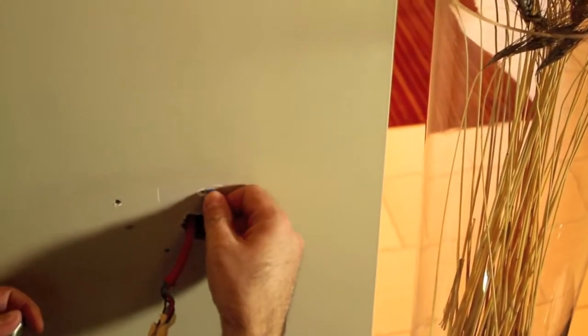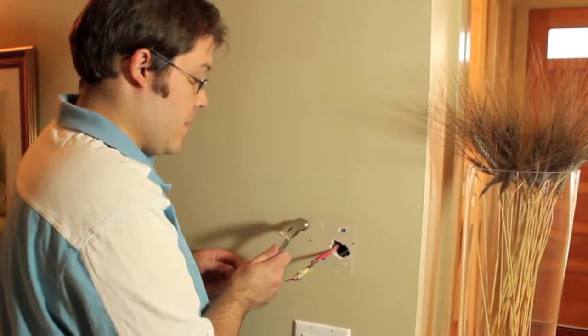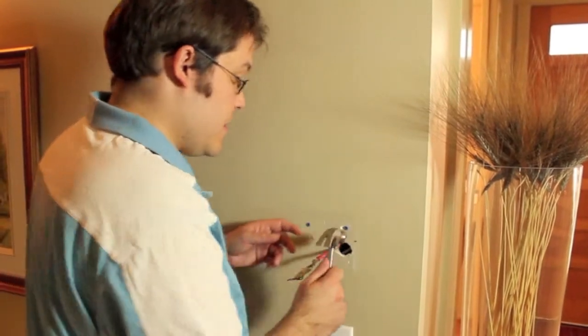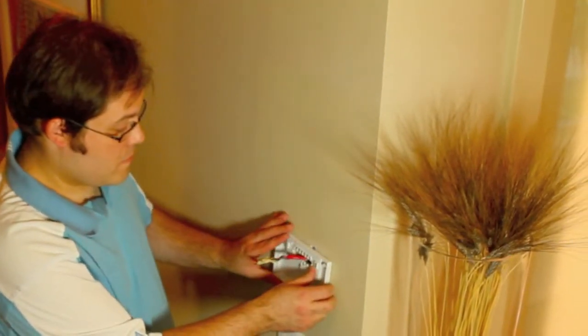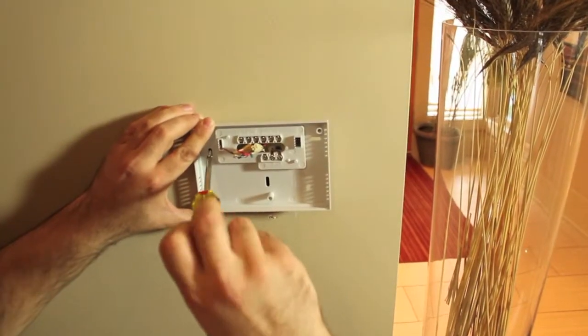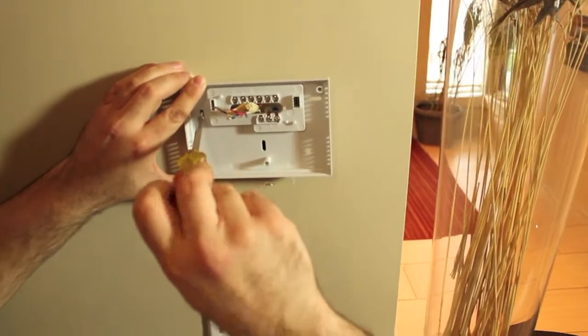Insert the wall anchors into the wall completely. If necessary use a hammer to tap in lightly. Pull the wires back through the hole of the back plate. Line up the back plate with the anchors and secure it in place with the screws.